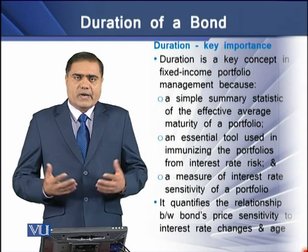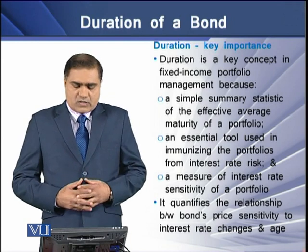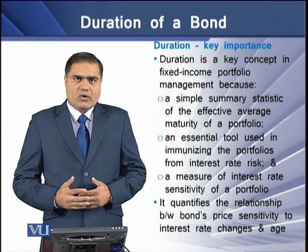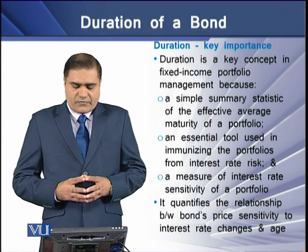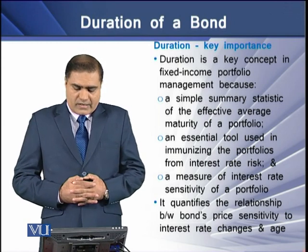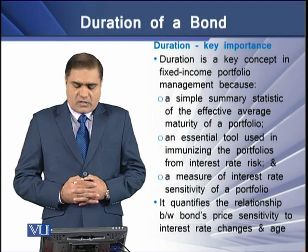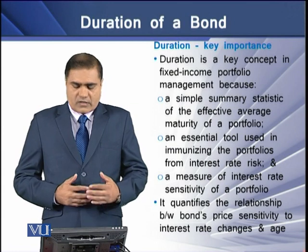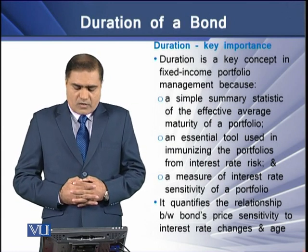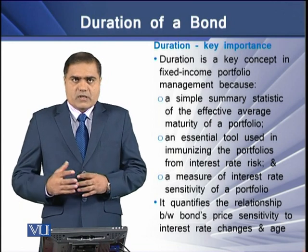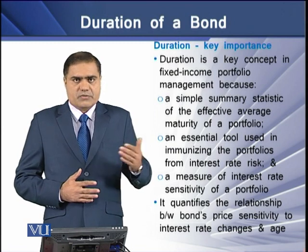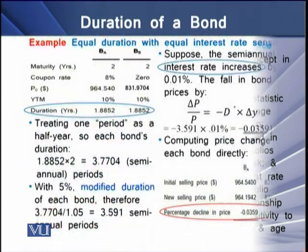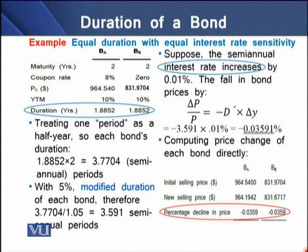Duration is a key concept in fixed income portfolio management for three reasons. First, it is a summary statistic of the average effective maturity of the portfolio. Second, it is an essential tool used in immunizing the portfolio from interest rate risk. Third, it is a measure of interest rate sensitivity of a portfolio. Apart from this, duration quantifies the relationship between bond price sensitivity to interest rate changes and maturity. Bonds with equal duration will have equal interest rate sensitivity.